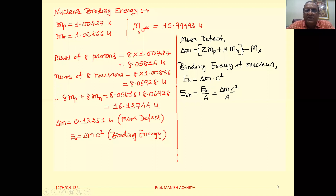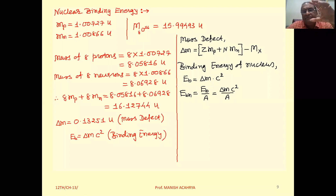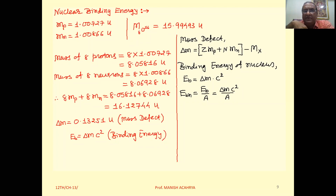The next topic is Nuclear Binding Energy. When we think about protons and neutrons in an independent, free state, and when they combine to form any element, at that time there is mass defect. What is the exact meaning of this mass defect? Let's understand this.